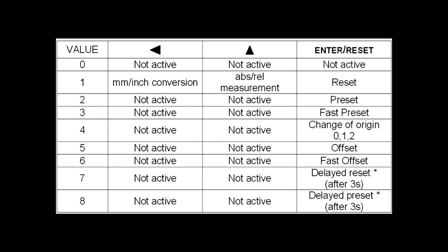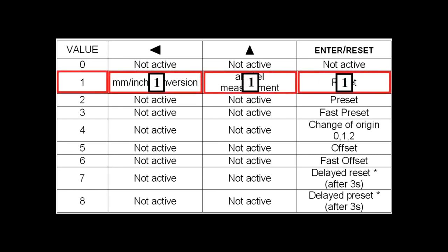For our example, we will enable the reset, absolute to relative value conversion, and the millimeter to inch conversion buttons in the user mode. The chart shows the required value of 111 for the digits in the code for making the keys function in our desired modes.